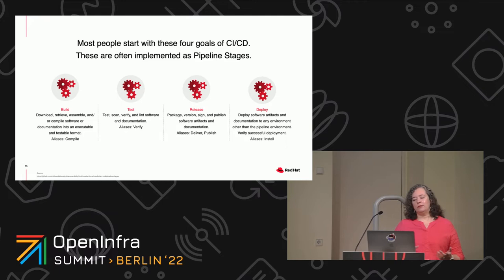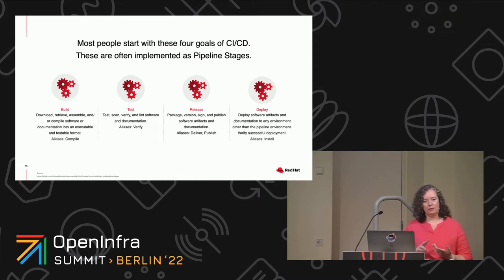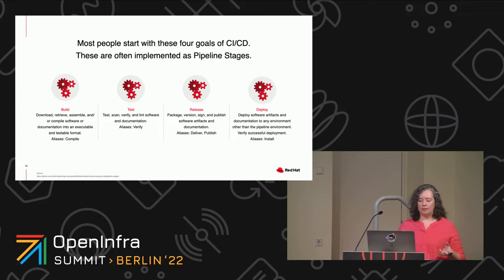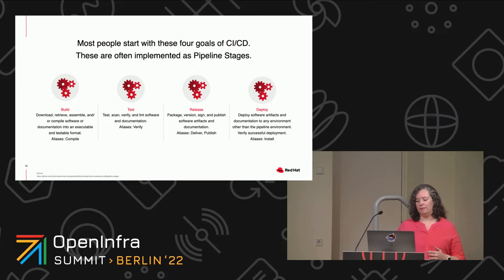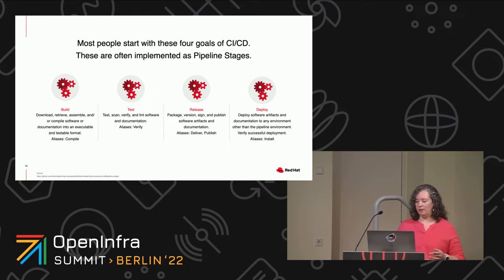Many people start with these four goals for their CI/CD, and these are often implemented as pipeline stages. First is build — you're going to download, retrieve, assemble, and compile software and documentation into an executable and testable format, sometimes also called compile. Then test is where you test, scan, verify, and lint software and documentation, also sometimes called verify. Release is where you package, version, sign, and publish the artifacts and documentation, sometimes called deliver or publish. And deploy is where you deploy those artifacts and documentation to any environment other than the pipeline or test environment, sometimes called install.